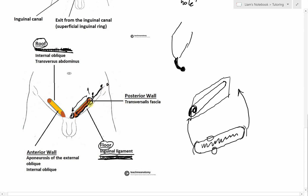Laterally, because of the way the muscles feed into the ligament, the anterior wall is actually the aponeurosis of external oblique plus the internal oblique muscle — so there's a contribution of internal oblique when you're in the lateral part of the inguinal canal.